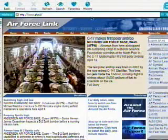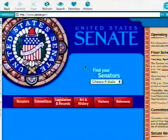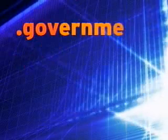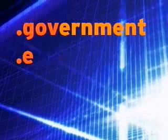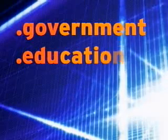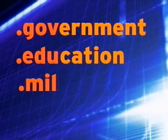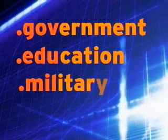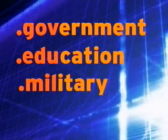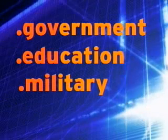You can usually trust information when it is published on websites that are part of the military, education, or the government. The URLs for these sites will have the following endings: .gov for government, .edu for education, and .mil for military.